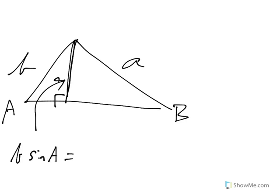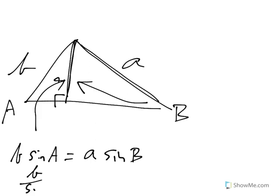Or if I think of it as being across from angle B, and A being the hypotenuse, A sine B. And then if I divide both sides by sine B sine A, I'll get B over sine B equals A over sine A.